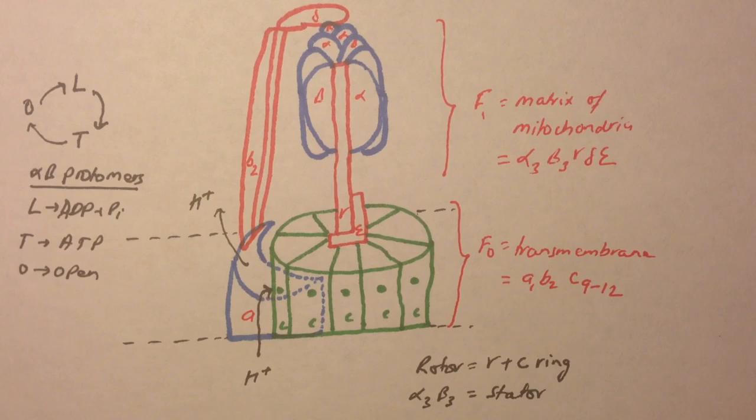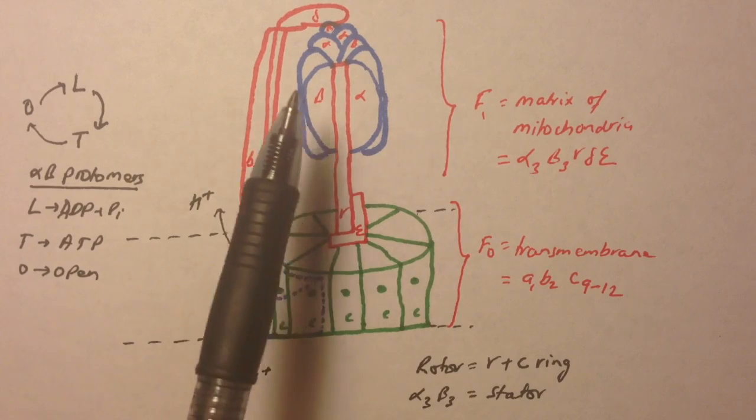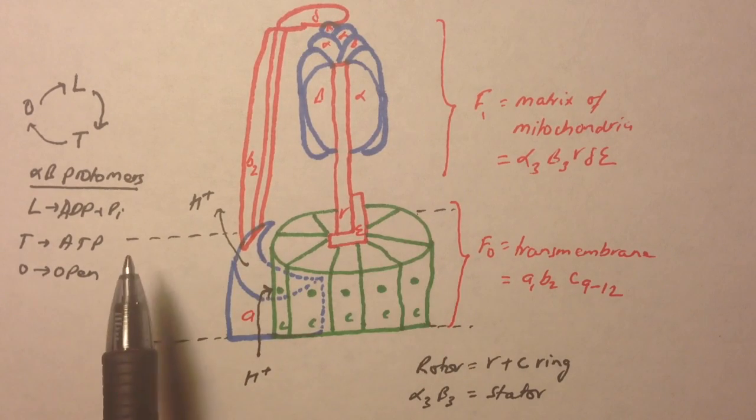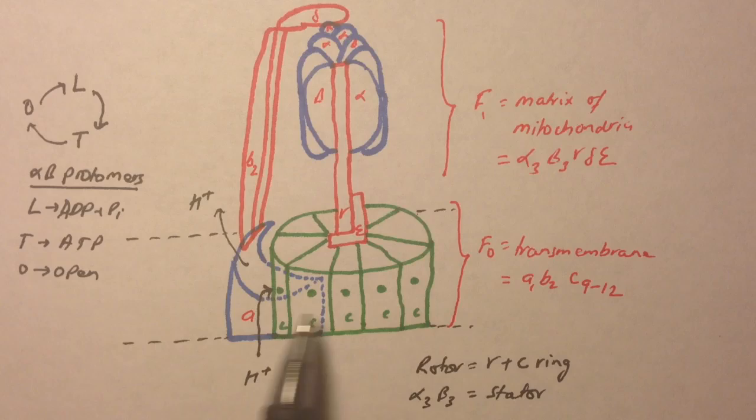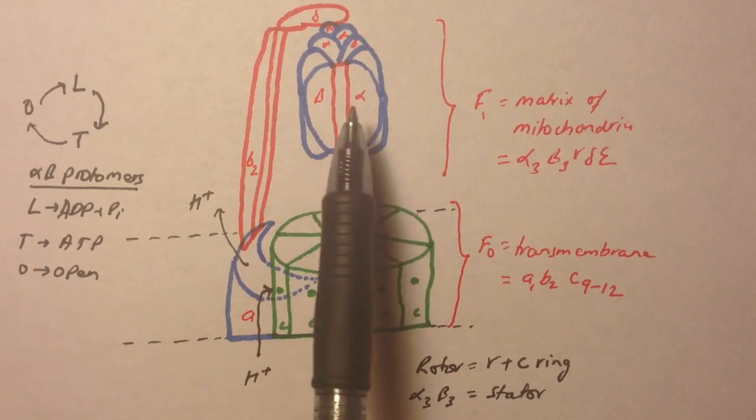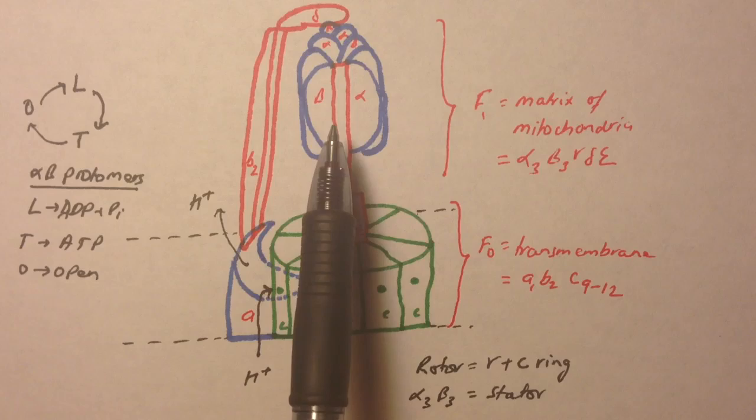Hi guys, in this video we'll talk about the structure of ATP synthase and how it makes ATP. This is a structure of ATP synthase I drew. This is your inner mitochondrial membrane, this is the intermembrane space side and this is the mitochondrial matrix side.